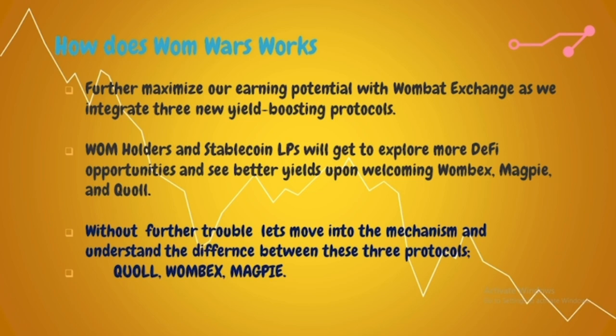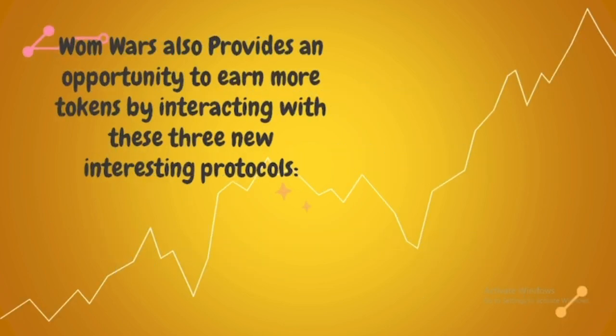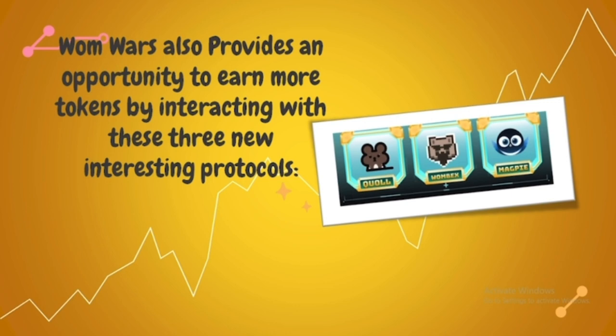To further maximize earning potential with Wombat Exchange, three new yield-boosting protocols are being integrated: Wombex, Magpie, and Quoll. WOMB holders and stablecoin LPs will get to explore more DeFi opportunities and see better yield. Womb Wars also provides an opportunity to earn more tokens by interacting with these three new interesting protocols.